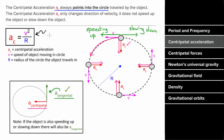The formula v squared over r only gives you the magnitude of the centripetal acceleration. This does not account for any tangential acceleration.